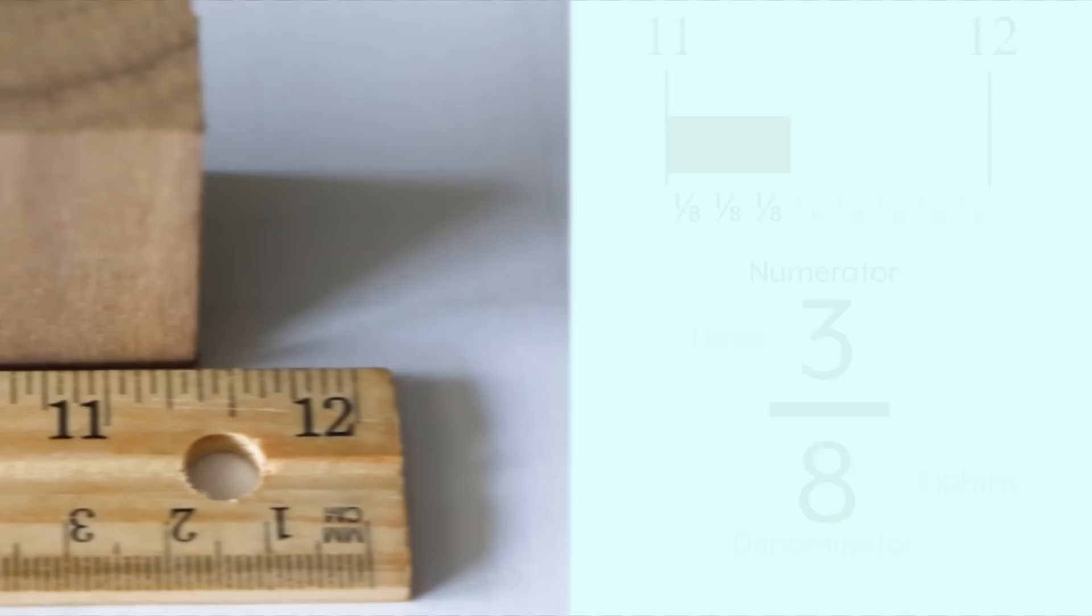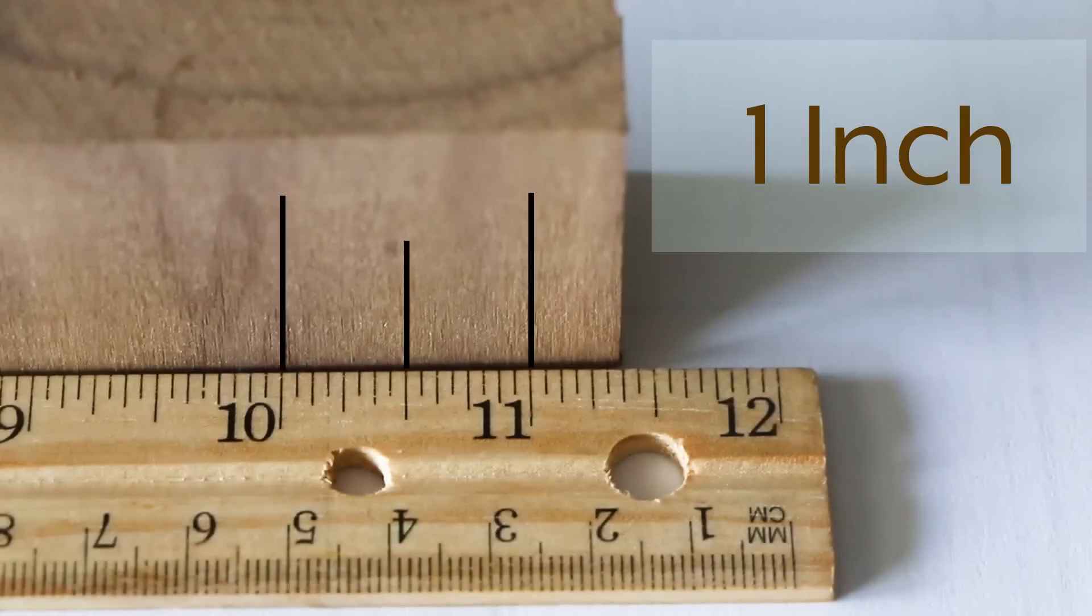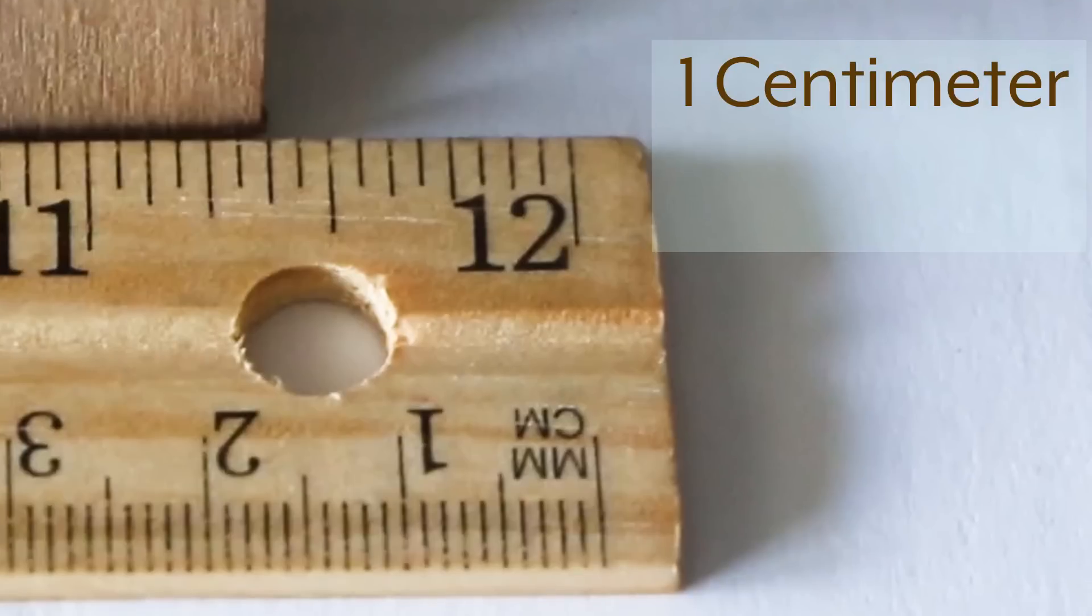When you're dealing with a ruler in inches, you generally are dealing with halves, or quarters, or eighths, or sixteenths, or whatever. When you're dealing in centimeters, you're generally dealing with tenths, called millimeters.